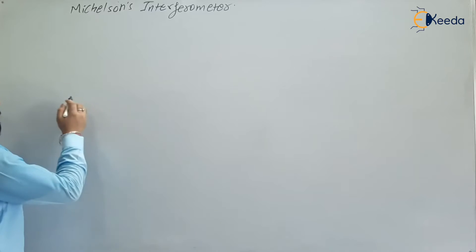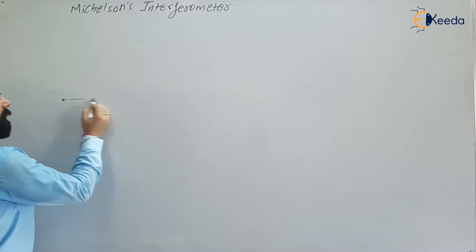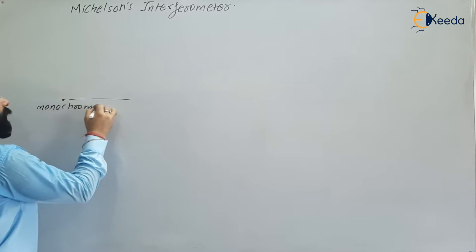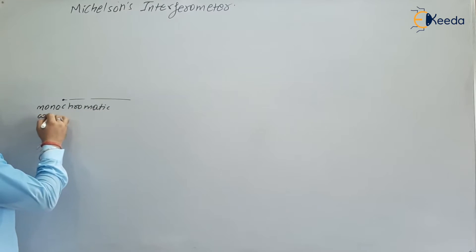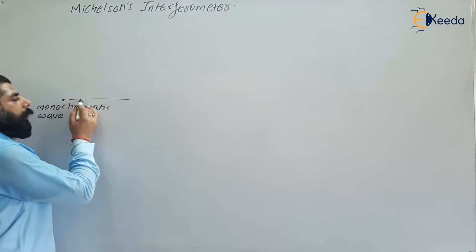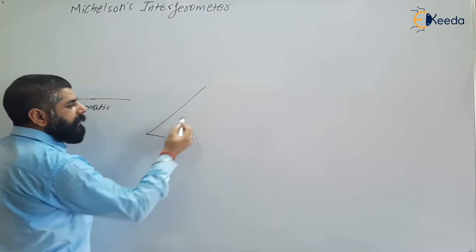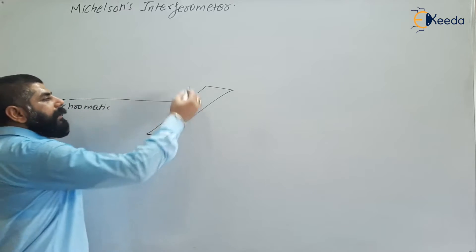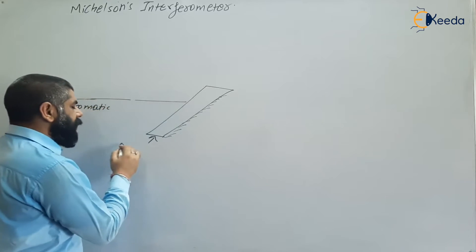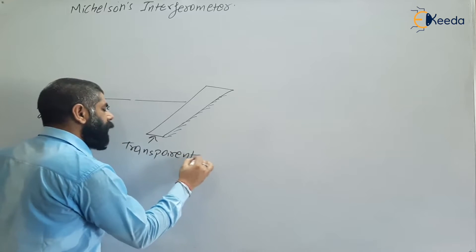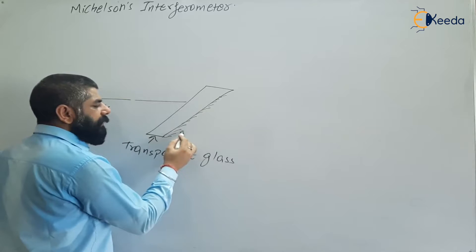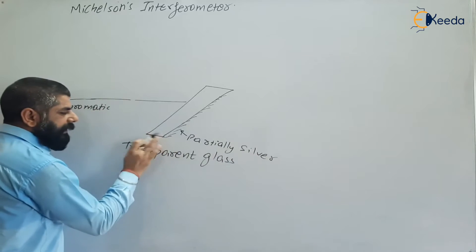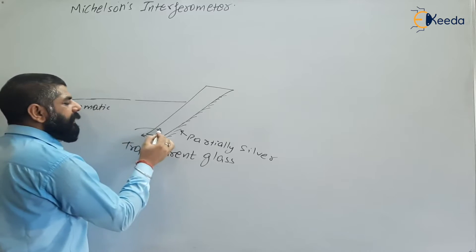The Michelson interferometer uses one monochromatic source of light — monochromatic meaning one wavelength. In between, a beam splitter is placed. The beam splitter is a transparent glass sheet that is partially silvered on one side. The thickness of this plate is t and the refractive index is mu.